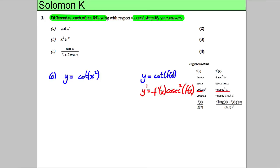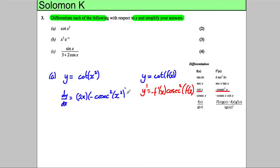I'm applying f(x) inside the cot, so I also get an f'(x) term. Therefore, dy/dx: I differentiate the inside function which gives 2x, and I multiply it by negative cosec squared of x². If I simplify that, I get negative 2x cosec²(x²).